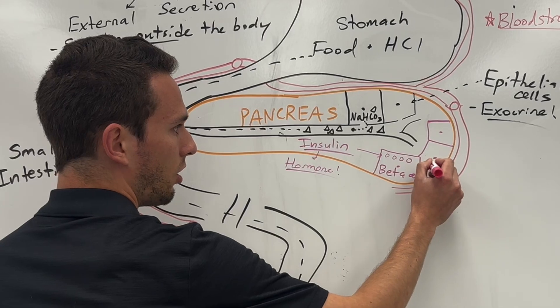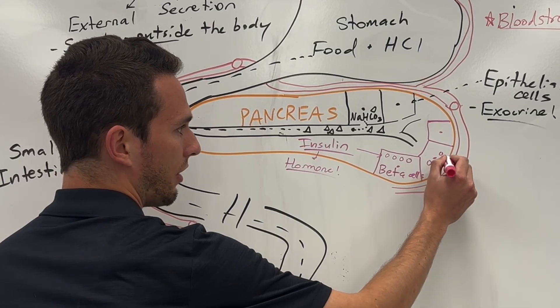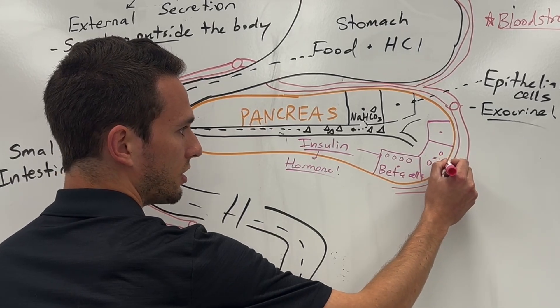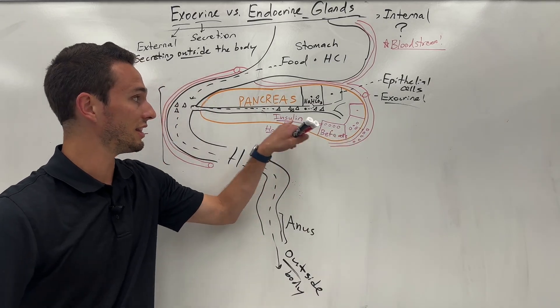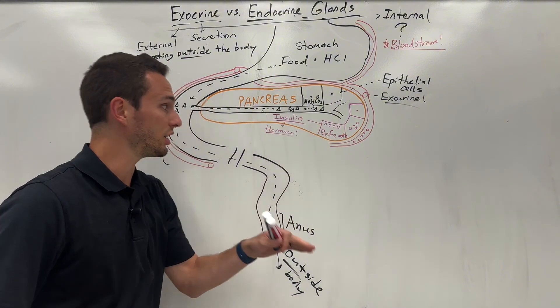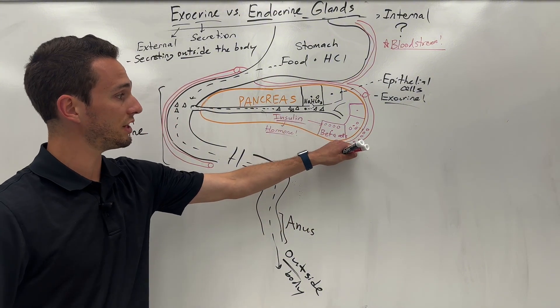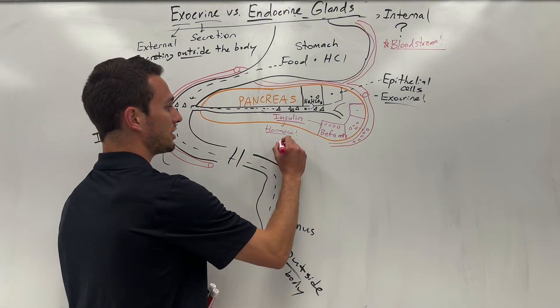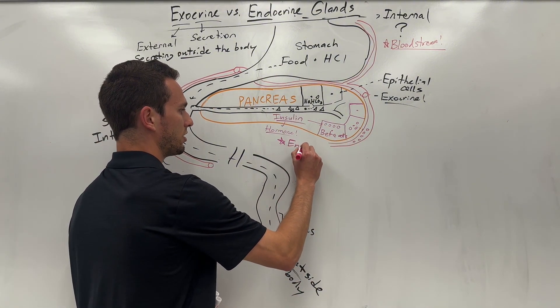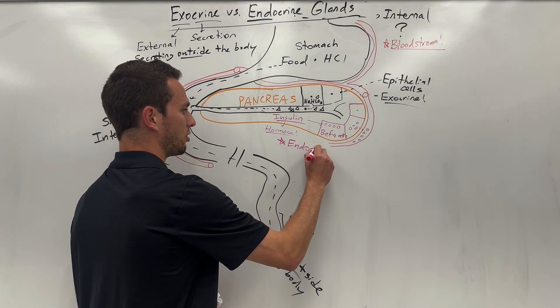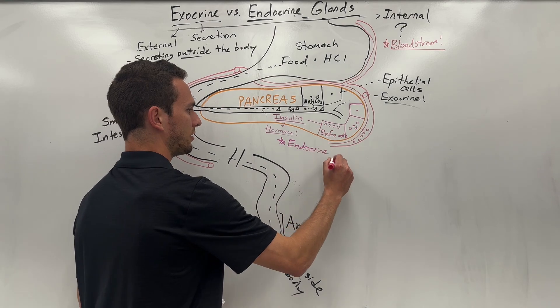So we're gonna take all of those insulin molecules and dump them into the bloodstream. Since the secretion — the insulin — is going into the bloodstream, we consider this an endocrine cell or an endocrine gland.